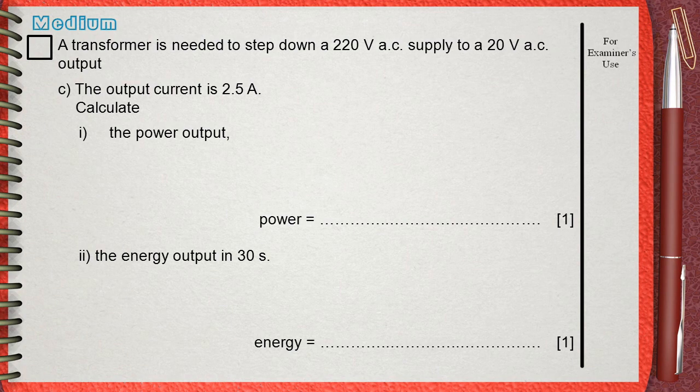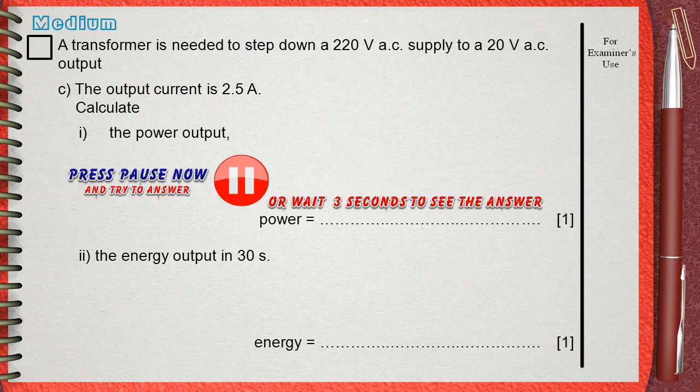Still in the same question, but now question C. The output current is 2.5 Amperes. Calculate the power.